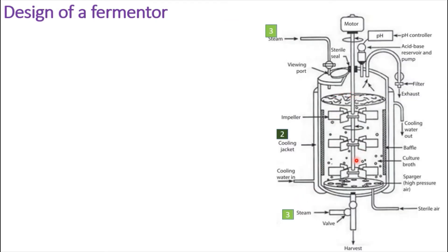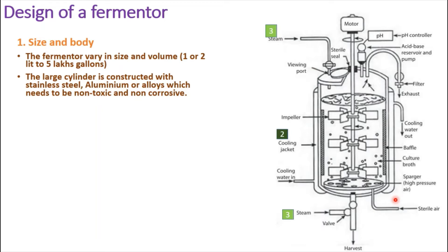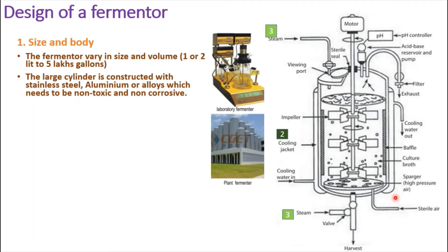Here is the diagram representing a basic fermenter. Fermenters vary in size and volume from one or two liters to five gallons. In the picture you can see a laboratory fermenter which is very small in size, and here is the industrial fermenter which is of a much larger quantity. These large cylinders are constructed with either stainless steel, aluminum, or alloys which need to be non-toxic and non-corrosive — those are the two main factors to notice when selecting material for a fermenter.